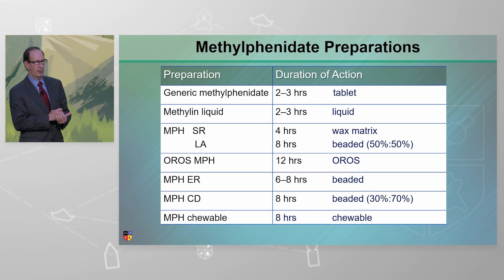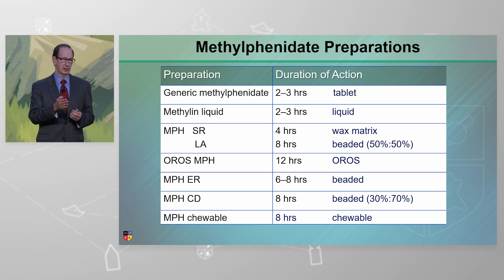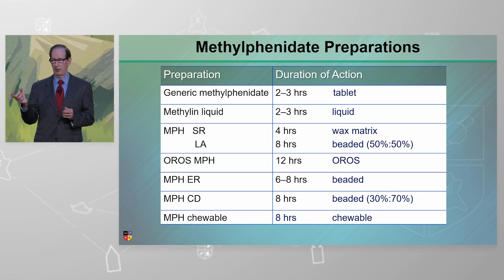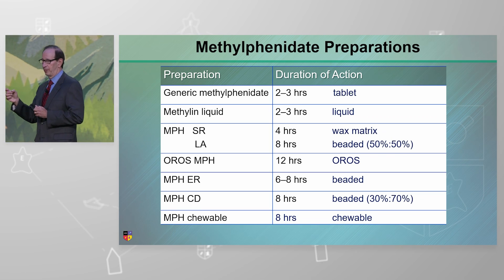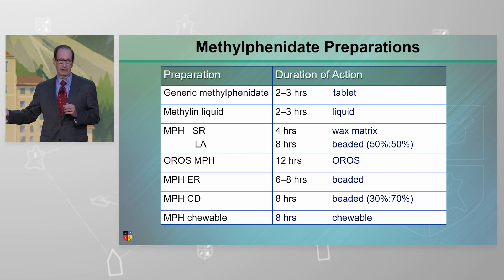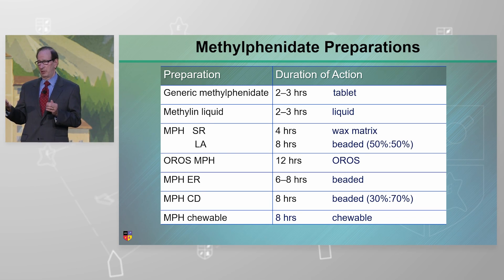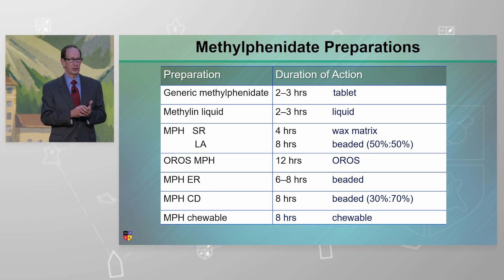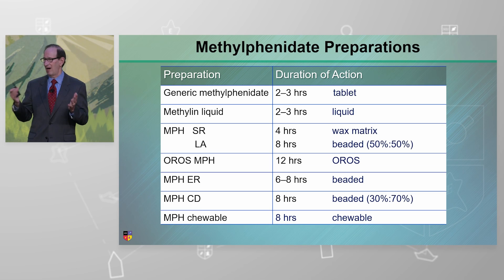The other thing to consider is beaded preparations for methylphenidate. The beaded preparations have an immediate release and a delayed release component, but the ratio of IR to ER differs between products. With methylphenidate LA, it's a 50:50 ratio; with methylphenidate CD, which is Metadate CD, it's 30:70. The question is whether you want to front-load or back-load the dosing — and that's up to you and the patient based on how they're responding. This is fundamentally how beaded preparations are set up: by the IR-to-ER ratio.